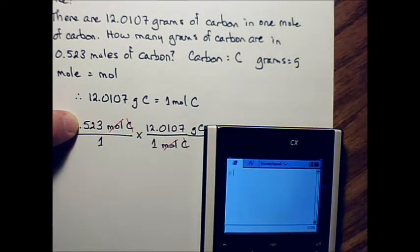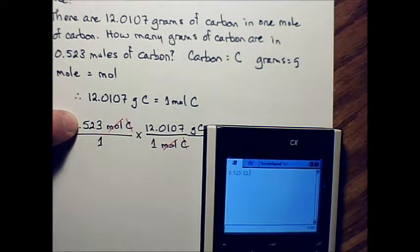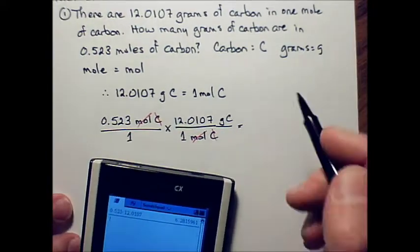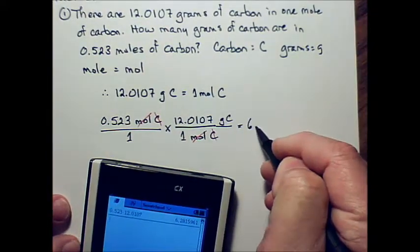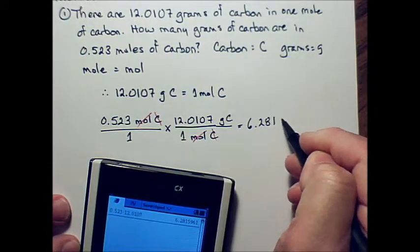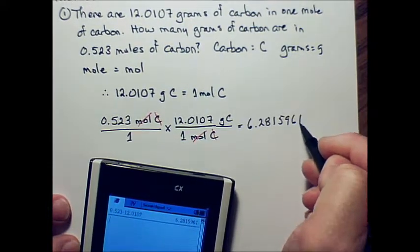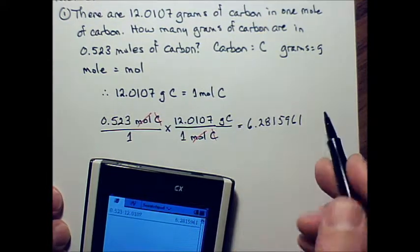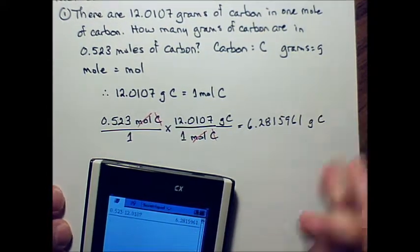There's only three significant digits. We haven't gotten to that yet, so don't sweat it too much. So 0.523 times 12.0107, and the number that I get, or the answer that I get here on my calculator, 6.2815961. We didn't cancel out grams or carbon, so we have to keep that.